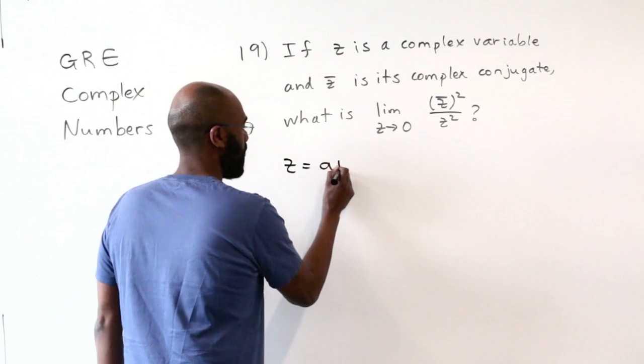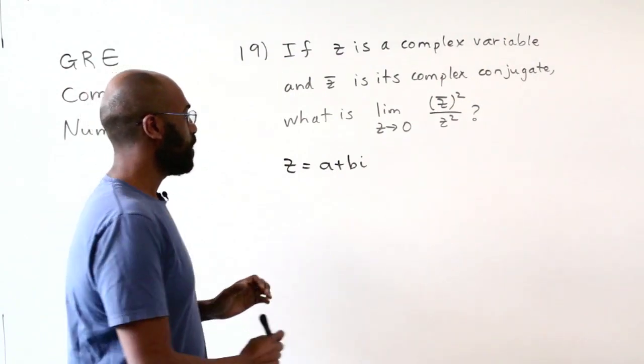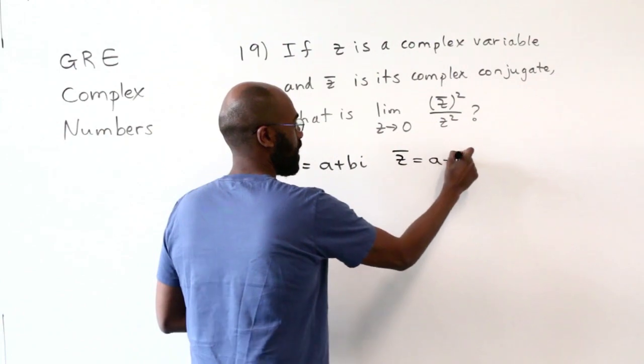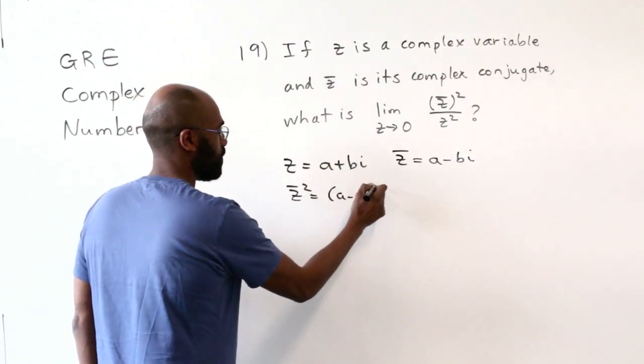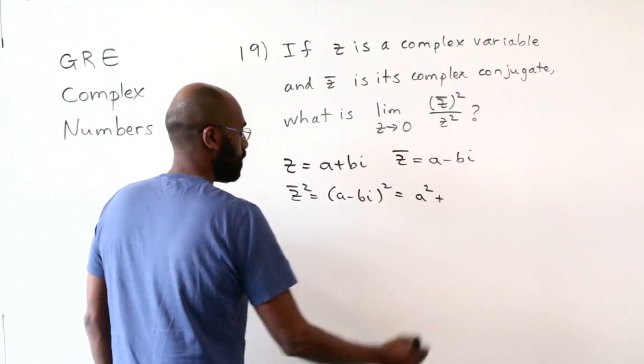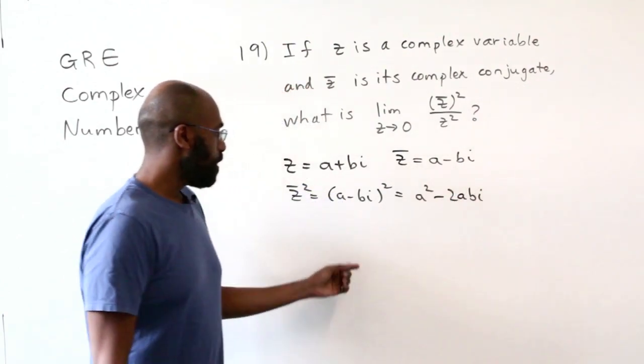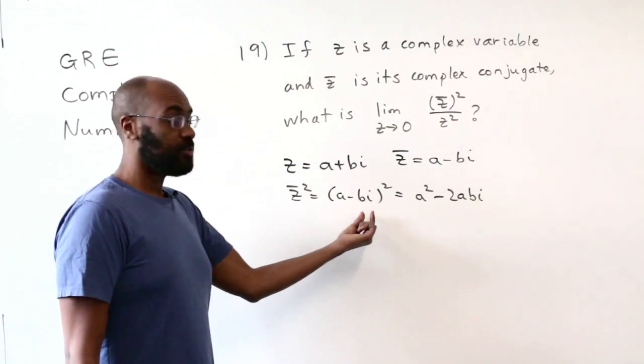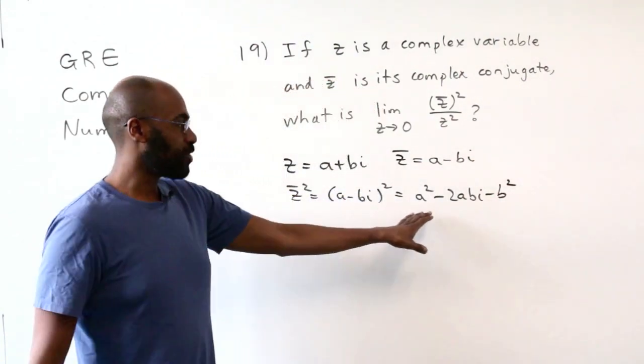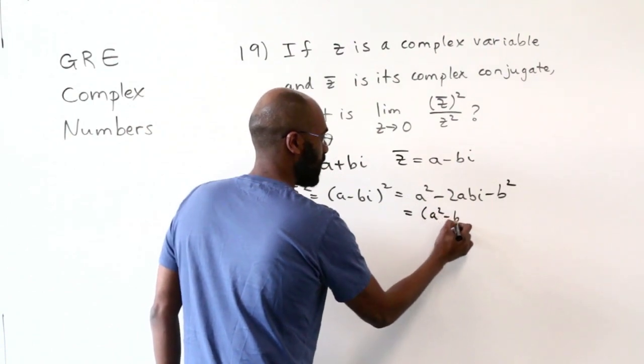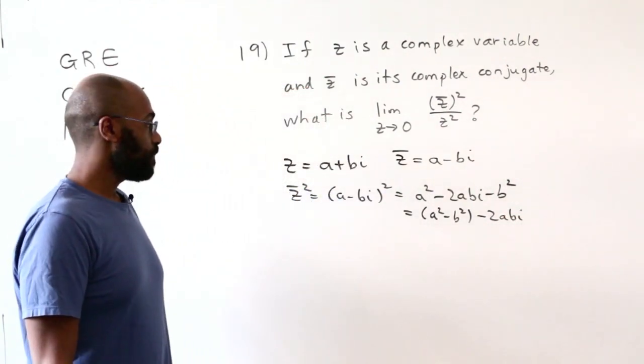Let's say z is the complex number a plus bi. Let's actually get explicit expressions for each of these things on the numerator and denominator. First of all, the complex conjugate is a minus bi. And so if we square the complex conjugate, that's going to be the quantity a minus bi squared, which is a squared minus twice abi, and then plus bi squared. Bi squared is b squared i squared, and i squared is negative one, so this is going to be minus b squared. I want to write this as an actual complex number, so I'll take out the real part, which is a squared minus b squared, and then the imaginary part, which is negative 2abi.